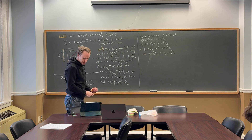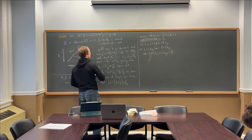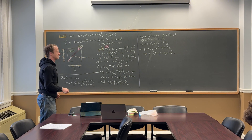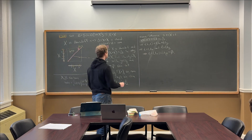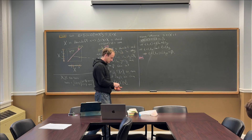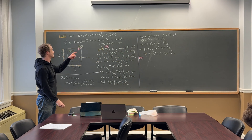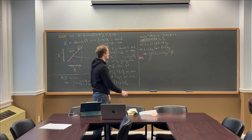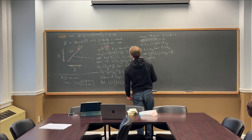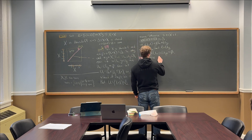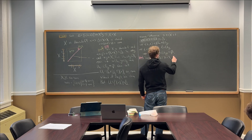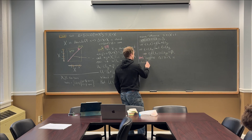So that's the forward direction. Pretty cool. Now what about the reverse direction? How are we going to do that? We've got to suppose that the diagonal is closed. Suppose Δ in X cross X is closed.